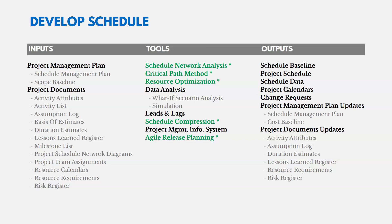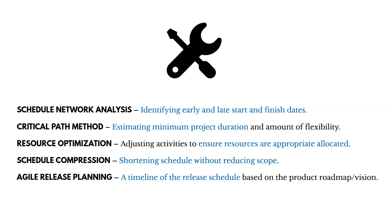Let's focus on the key tools for developing the schedule. Schedule network analysis identifies early and late start and finish dates. The critical path method estimates the minimum project duration — the critical path is the longest path, so if something on it is delayed, the entire project could be delayed. Resource optimization adjusts activities to ensure resources are appropriately allocated — for instance, if one person is scheduled on two activities simultaneously, you need to adjust so they're not over-allocated.